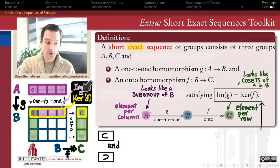when it's an exact sequence, those two are exactly the same set. In other words, we have both containments. We have both that the image of G is a subgroup of the kernel of F, and also that the kernel of F is a subgroup of the image of G.